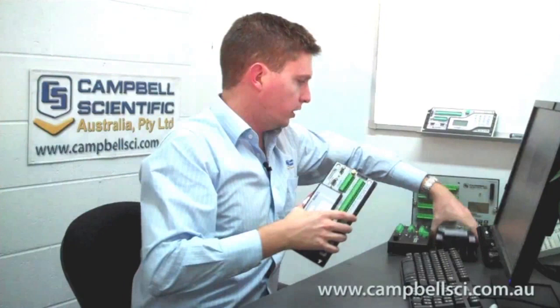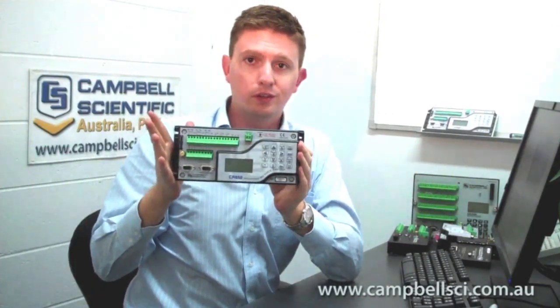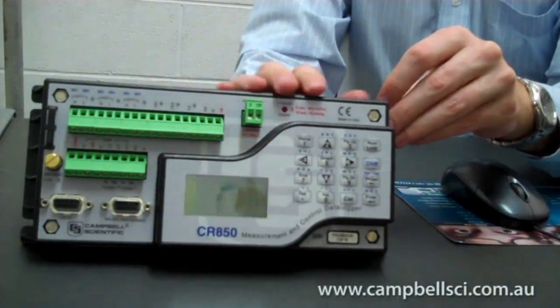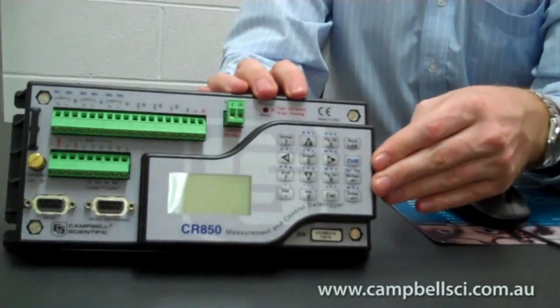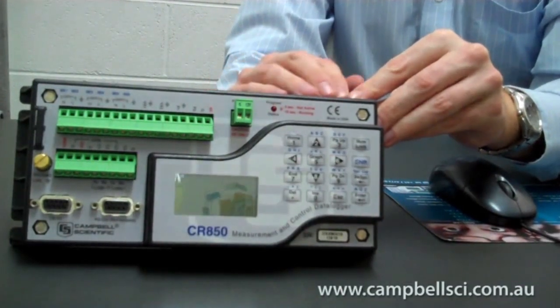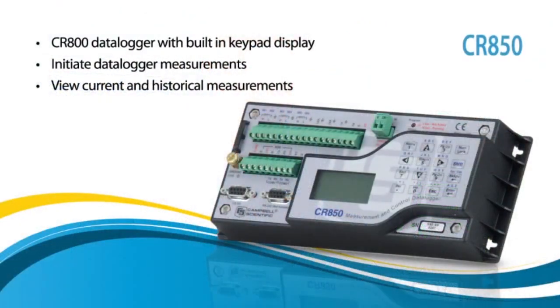In addition to the CR-800, we also sell the CR-850 — exactly the same as the CR-800, same number of channels, same programming, but with an added keypad display. Using the keypad, you can browse the current measurements, look through what data is being stored, and initiate program operations like MeasureNow or StoreNow.